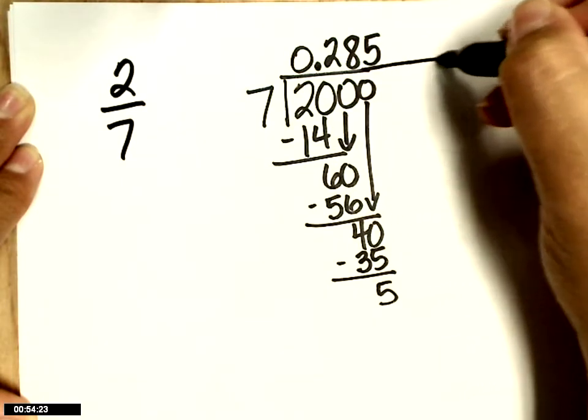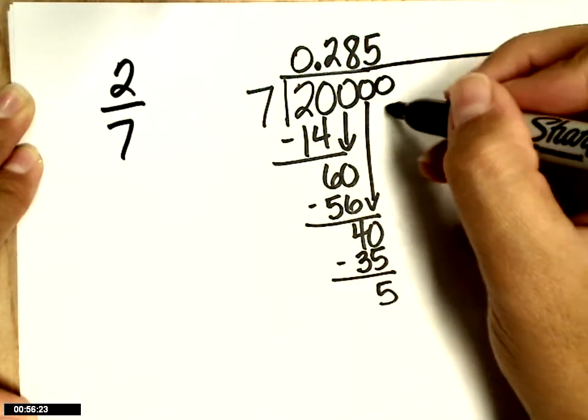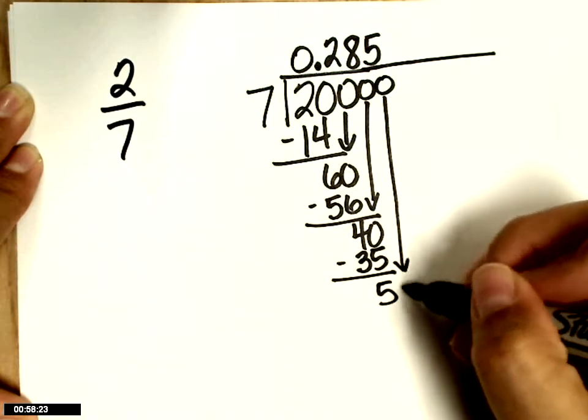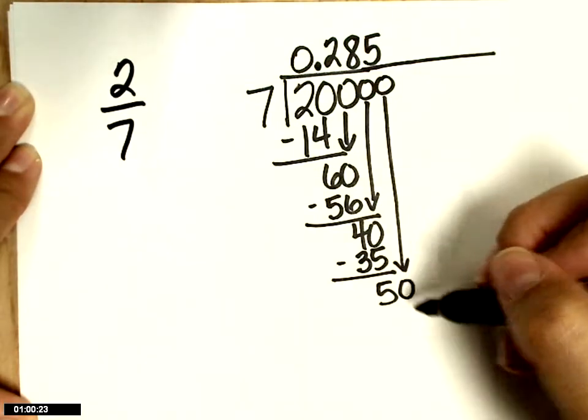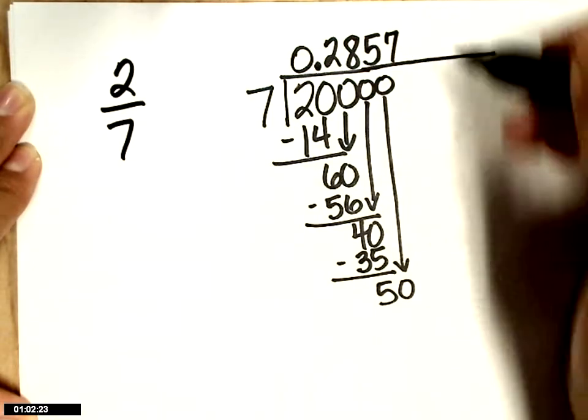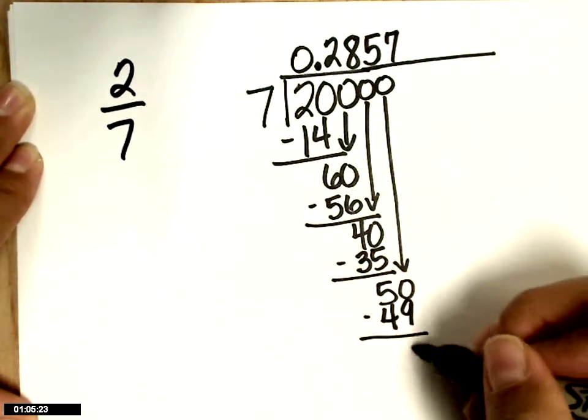Now what? Add another 0. And 7 times what gives me close to 50? That's 7. Thank you. 49. Subtract, you get 1.